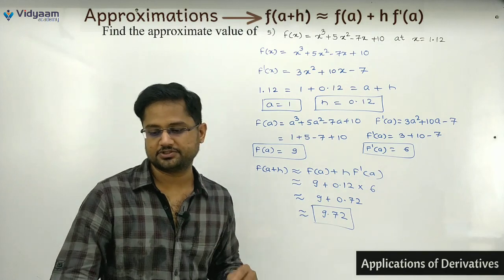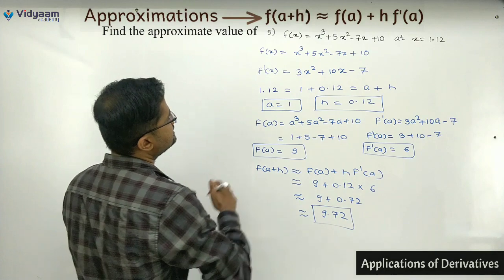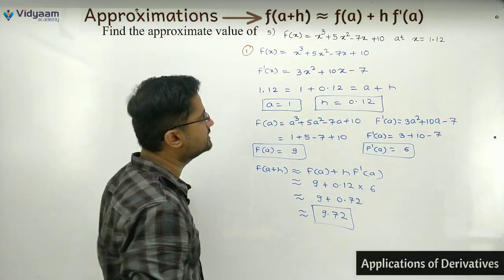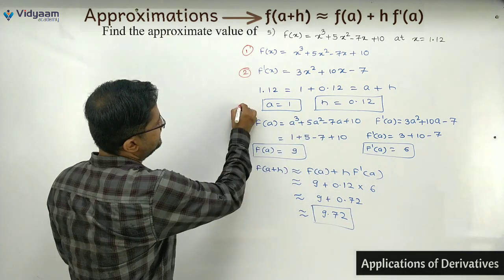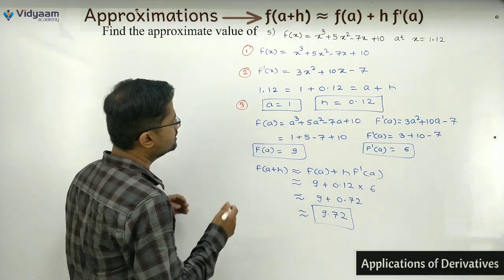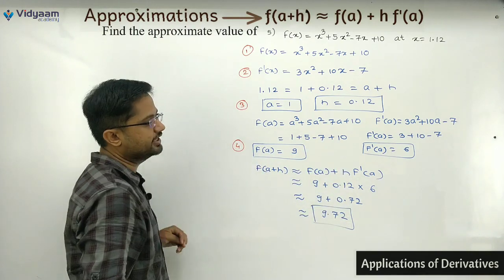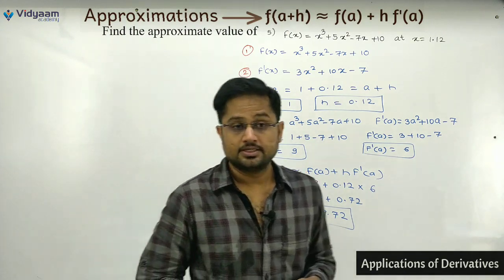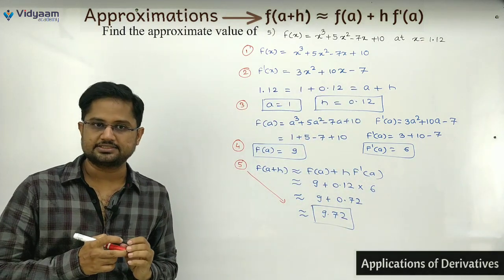Quick revision: Step 1 — find f(x). Step 2 — find f'(x). Step 3 — split and extract a and h. Step 4 — find f(a) and f'(a). Step 5 — use the formula. Step 6 — simplify. That's it — this ends our approximation sums.